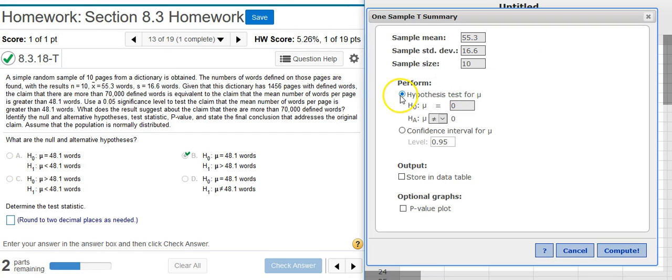For this radio button for hypothesis test, that's the default selection we want to keep because we're performing a hypothesis test. We want to make sure this area matches what we selected here in the previous part of the problem, so we need to change this claimed value from 0 to 48.1, and then I need to make sure that this inequality sign matches what we have over here for our alternative hypothesis.